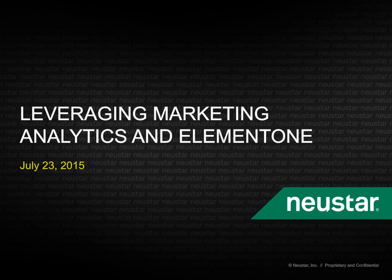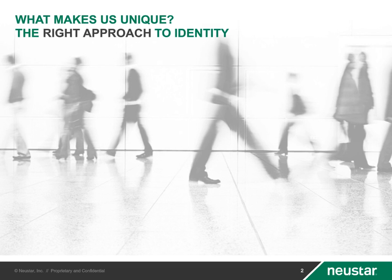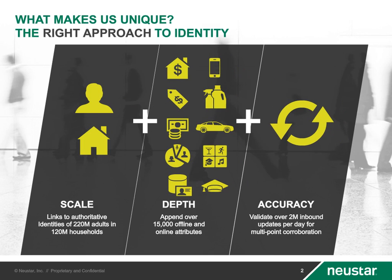One of the things that makes us unique is our approach to starting from the ground up when it comes to building an analytic framework. We start with an authoritative identity for every household in the United States. We essentially have target lock on every household as a result of the relationships that we have with over 200 authoritative sources of identity. We have a view of every household tied to a persistent identifier, and each identifier we receive from our partners gets tied to that persistent ID.